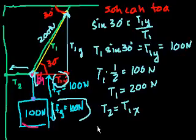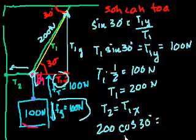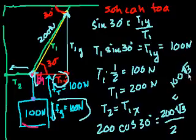And what's the x component? Well, it's going to be the tension in the first wire, 200 newtons, times the cosine of 30 degrees. It's adjacent over hypotenuse. And that's square root of 3 over 2. So it's 200 times the square root of 3 over 2, which equals 100 square roots of 3.